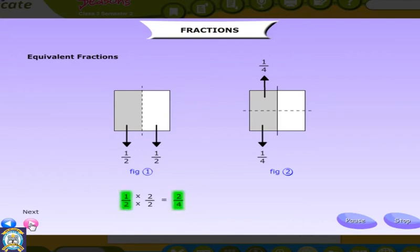Both 1/2 and 2/4 are called equivalent fractions. Equivalent fractions have the same value. To get an equivalent fraction, multiply the numerator and denominator by the same number.